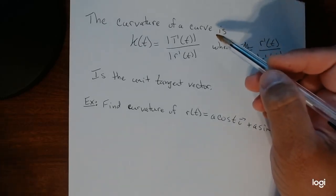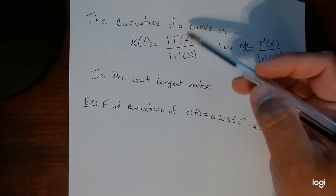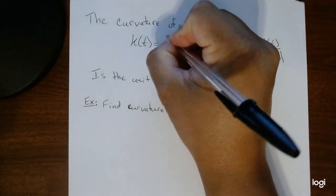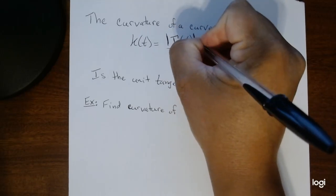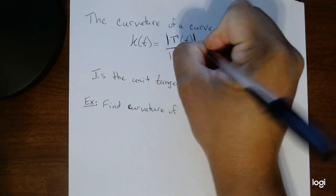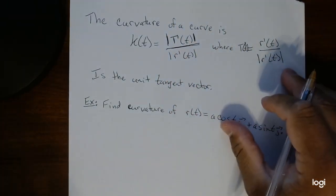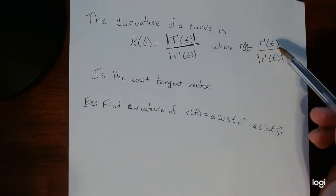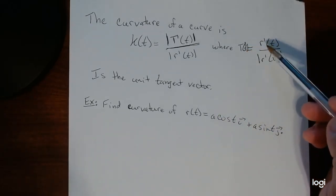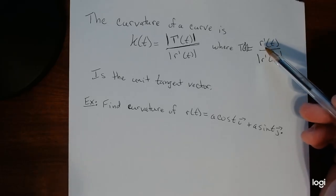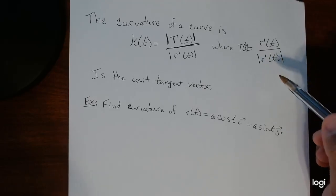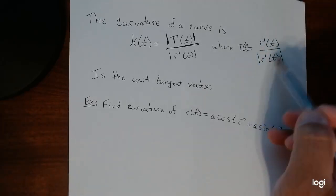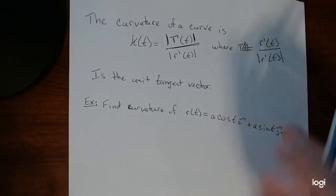The curvature of a curve is given by the length of the derivative of the tangent vector, divided by the length of the derivative of the vector itself. Where t is a tangent vector. So that's the derivative of the vector divided by the magnitude of the vector. This is called the unit tangent vector.